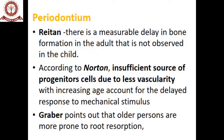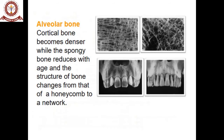The blood flow is reduced because capillary thickness decreases with age, reducing the progenitor cells that come into action. Graber also pointed out that older persons are more prone to root resorption. Looking at the alveolar bone, the cortical bone becomes denser — cortical bone increases and spongy bone reduces. Since spongy bone is where blood flow occurs, when cortical bone thickness increases and spongy bone reduces, blood flow is also reduced.